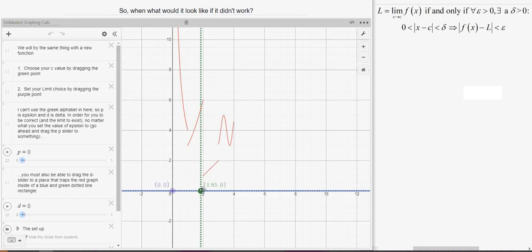So here I'm going to choose 2 as my C value, and I can see on here that maybe I want to say that the limit is down here at 1 again.